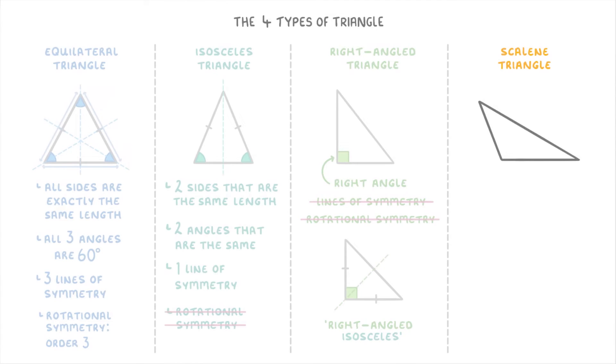Last we have the scalene triangle. And the special thing about these is that all three sides are different lengths, and so all three angles are different sizes. This means that they have no lines of symmetry and no rotational symmetry.